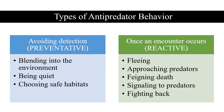To avoid detection by predators, animals may blend into the environment like cryptic matching, be quiet once a predator is detected, or choose habitats that are safer. If an encounter occurs, an animal may react by fleeing, approaching predators to gather more information, faking death, signaling to predators to deter an attack, or fighting back. Clearly, there are many ways animals may attempt to avoid or escape predators.